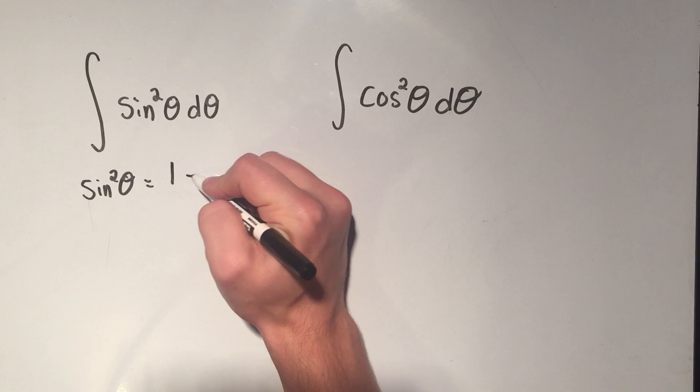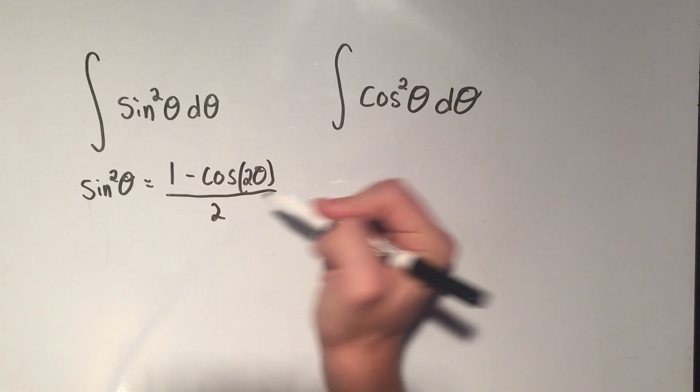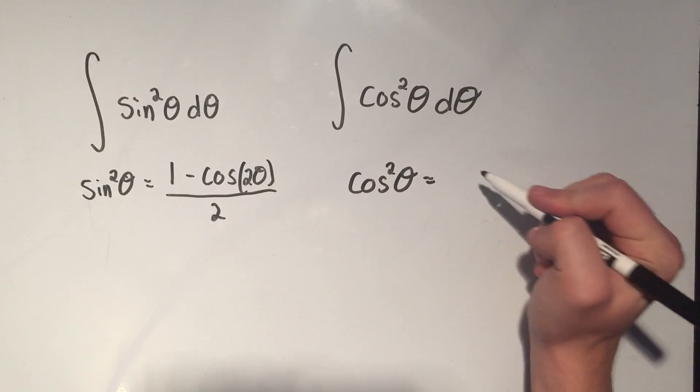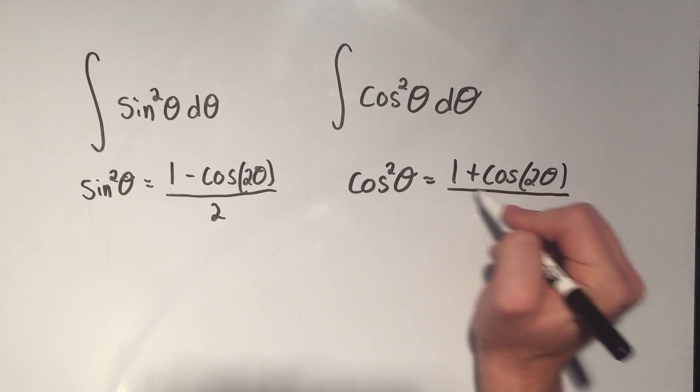Sine squared is 1 minus cosine of 2 theta over 2, and cosine squared theta equals 1 plus cosine 2 theta over 2.